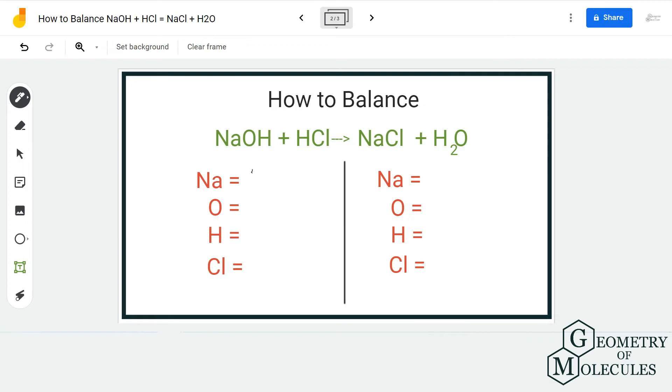Here we have one sodium atom on the reactant side, one oxygen atom on the reactant side. For hydrogen it is 1 plus 1 equals 2, and for chlorine we have one on the reactant side. When you move to the product side, we have one sodium atom, one oxygen atom, two hydrogen atoms, and one chlorine atom.